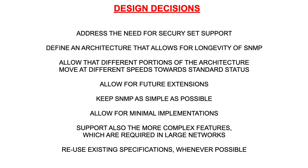The second requirement is that the architecture should allow for longevity of SNMP. That indeed succeeded, since SNMP is still being used and the RFC that describes the architecture is still valid, although there have been some updates. The third requirement is that the architecture should define separate modules, allowing these modules to proceed at different speeds towards standard status. Remember that there were competing proposals before this architecture was defined, and thus the requirement to separate into different modules allowed a divide and conquer approach.